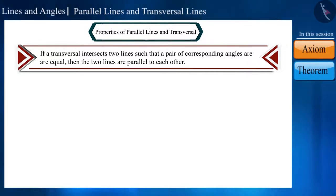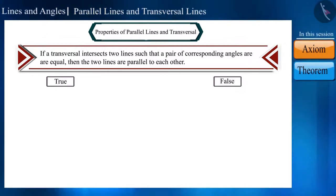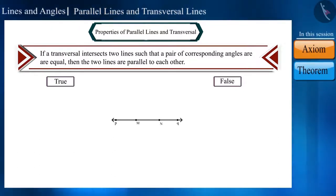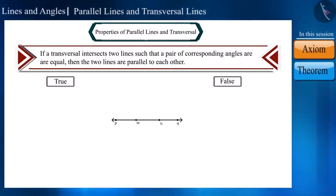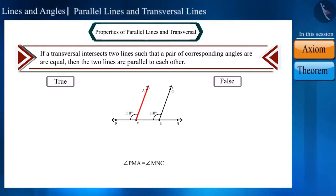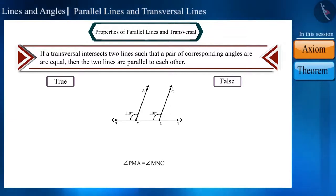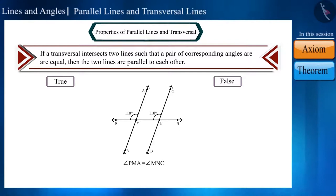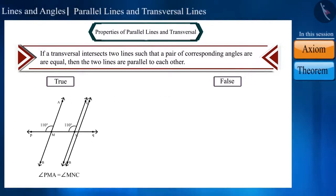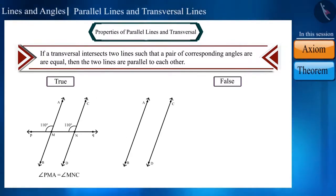Friends, is this statement true? Let us check. Draw a line PQ and mark two points M and N on it. Construct angle PMA and angle MNC on these points in such a way that they are equal to each other. Draw the lines AB and CD by extending AM and CN respectively to the other side of PQ. These two lines are not intersecting each other.